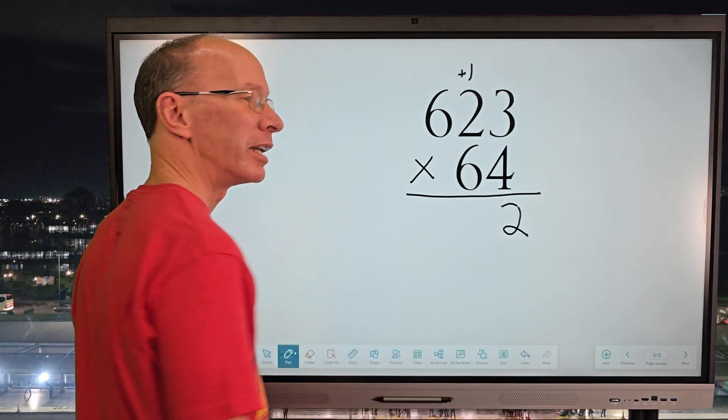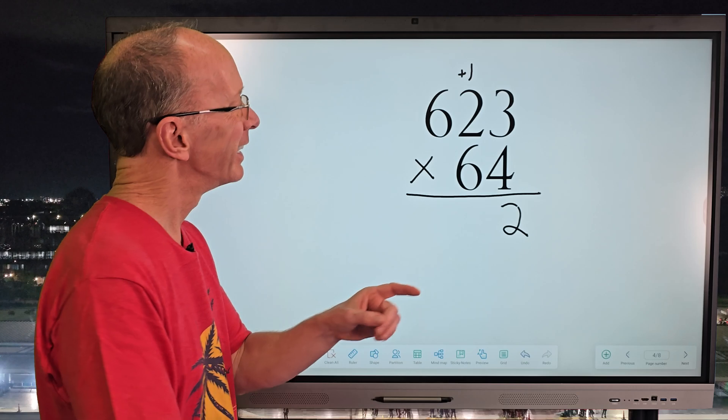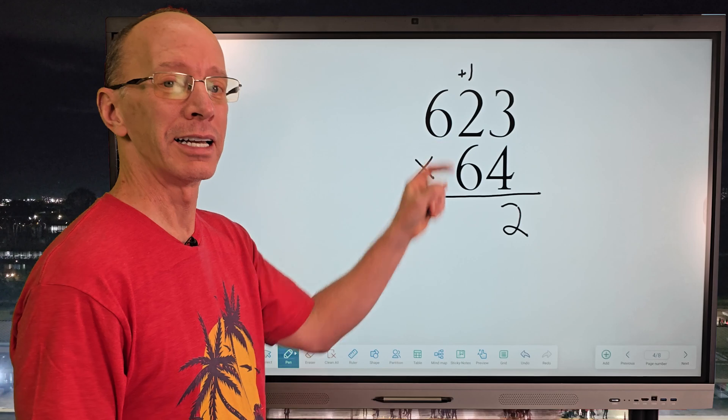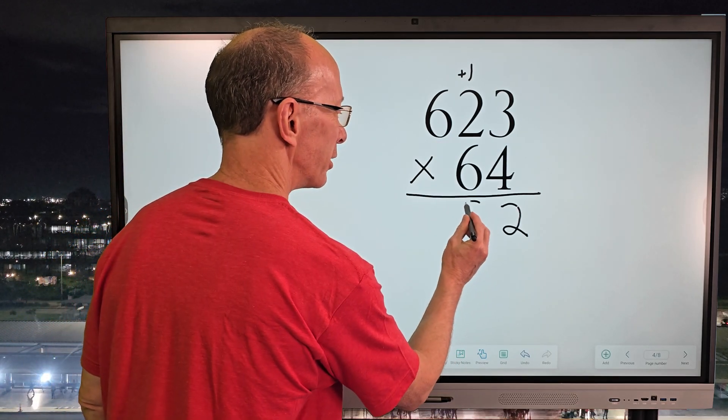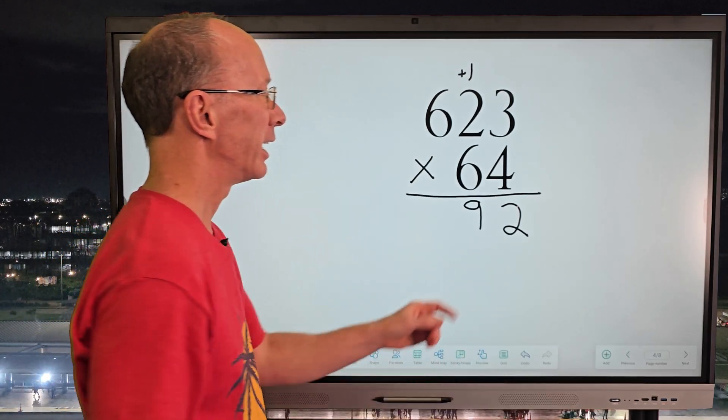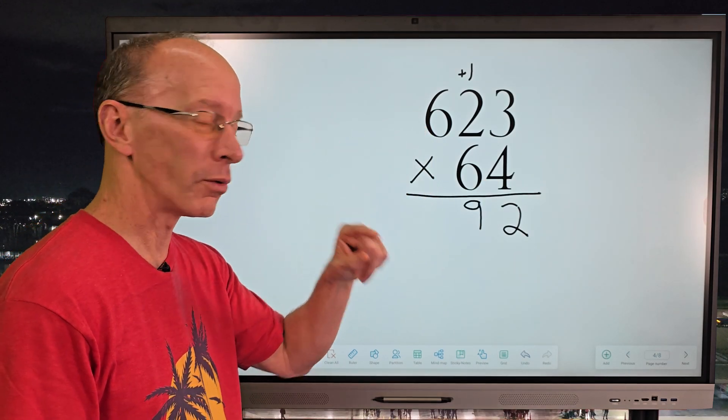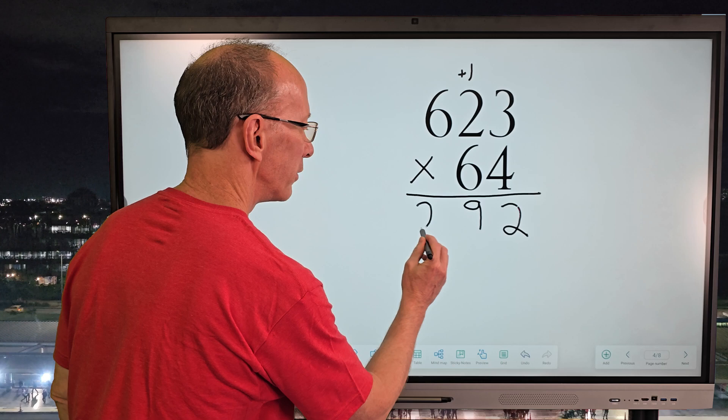We're going to be adding that 1 in a little bit. Not yet. Now we're going to go ahead and multiply 4 times 2 is 8 plus the 1 would be 9. So let's go ahead and put 9 right there. And now I'm going to go ahead and multiply 4 times 6 equals 24. Go ahead and put 24 right here.